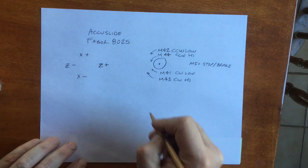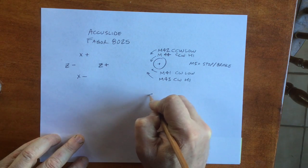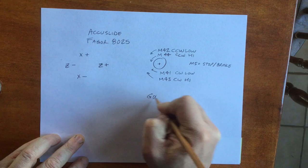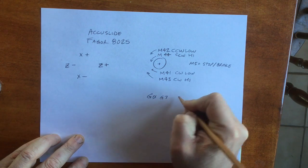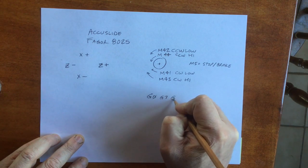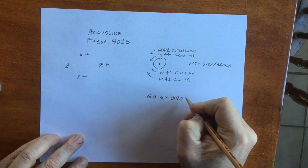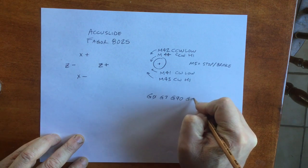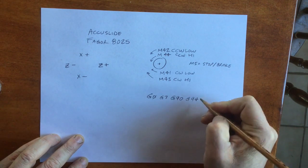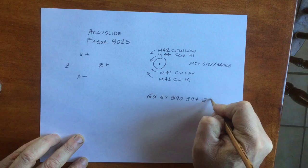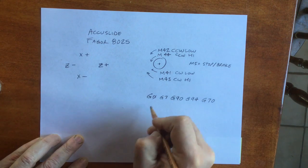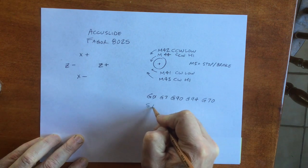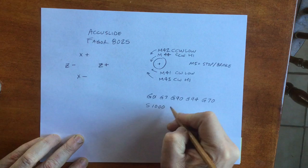This is a programming example for hex gadgets. I start every tool with the same set of preparatory codes: G0 is rapid travel, G7 is square corners, G90 is absolute, G94 is inches per minute, and G70 is inches.